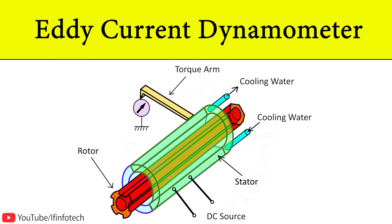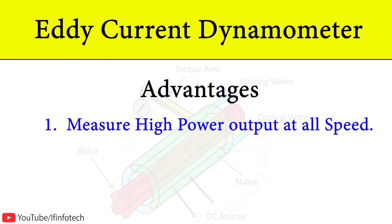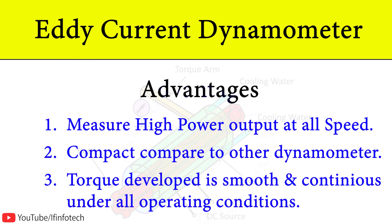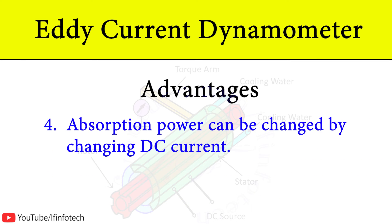The eddy current dynamometer measures high power output at all speeds. It is compact as compared to other dynamometers of the same capacity. The torque developed is smooth and continuous under all operating conditions. The absorption power can be changed by changing the DC current.